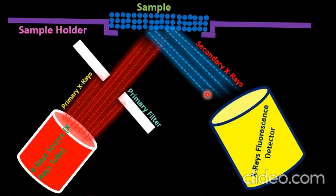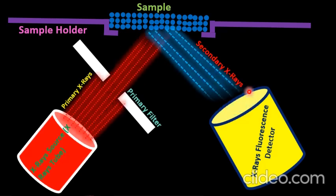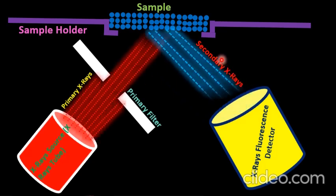In simple terms, XRF spectroscopy is based on the detection of secondary X-rays emitted from a sample surface. Every element emits secondary X-rays with a specific wavelength and energy, and based on that specific energy and wavelength the type of element is identified. The intensity with which secondary X-rays are generated gives information about the chemical composition — the percentage of each element present in the material.